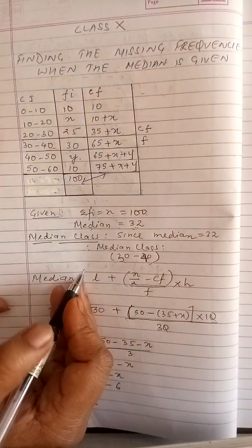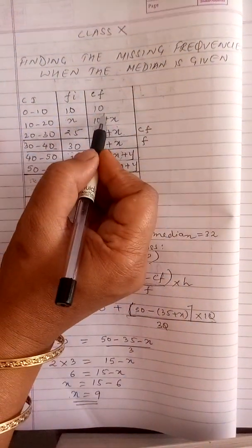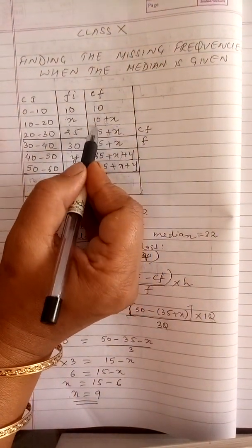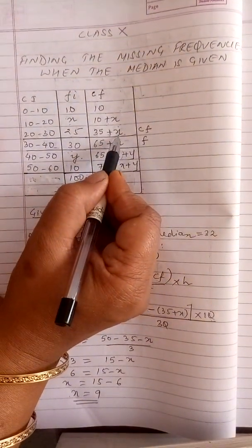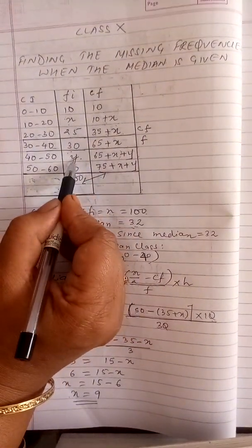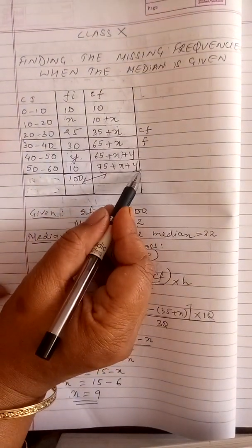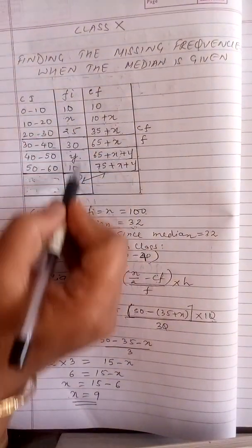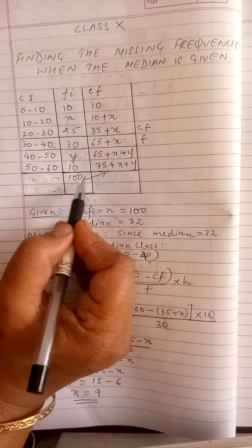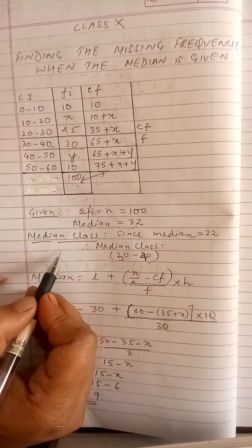Now we proceed solving this question. The first step is to find the cumulative frequency. To find the cumulative frequency, the first one is written as it is. Then I add this 10 to x, I get 10 plus x. Then I add 10 plus x to 25, I get 35 plus x. Then I add 35 plus x to 30, I get 65 plus x, then 65 plus x plus y. Lastly, I add 65 plus x plus y to 10, so I get 75 plus x plus y. The total of the frequency is always equal to the last value of your CF.